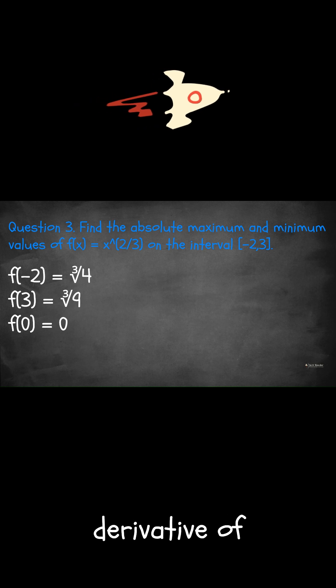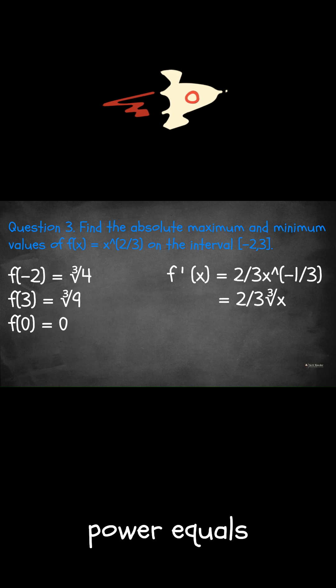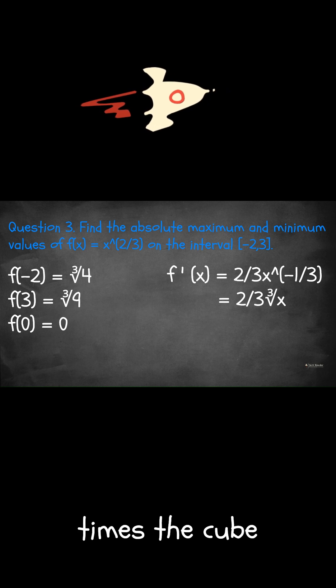Let's take the first derivative of the function. f prime of x equals 2 thirds x to the negative 1 third power equals 2 over 3 times the cube root of x.